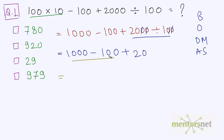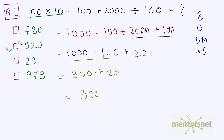1000 minus 100 is equal to 900, plus 20, which equals 920. So we have our answer right there: 920.